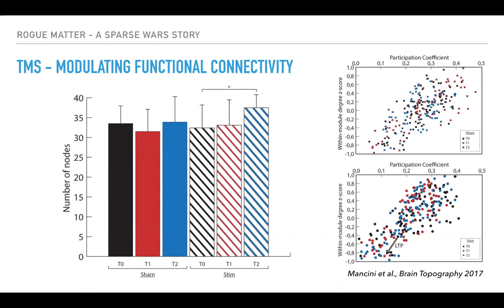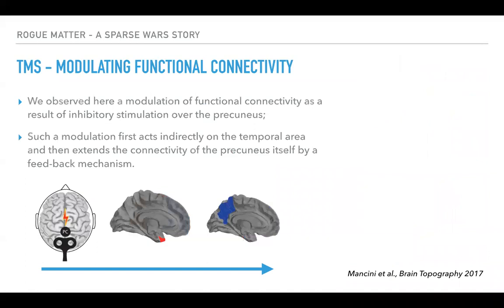When we actually looked at the number of nodes in the precuneus community, we could see there was a significant increase at the second time point, not the first one as the effect on the left temporal pole. So we started to think: the effect here seems to be that as soon as you stimulate — and this is an inhibitory stimulation — you are disrupting the functional connections with the temporal area. Then, as a later effect, you see an increment in the number of functional connections of the precuneus.